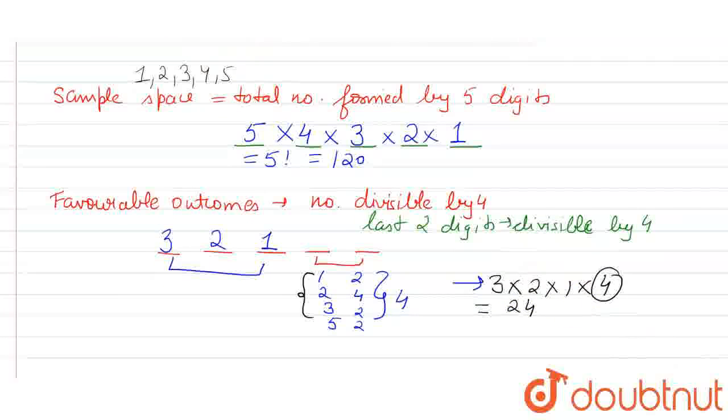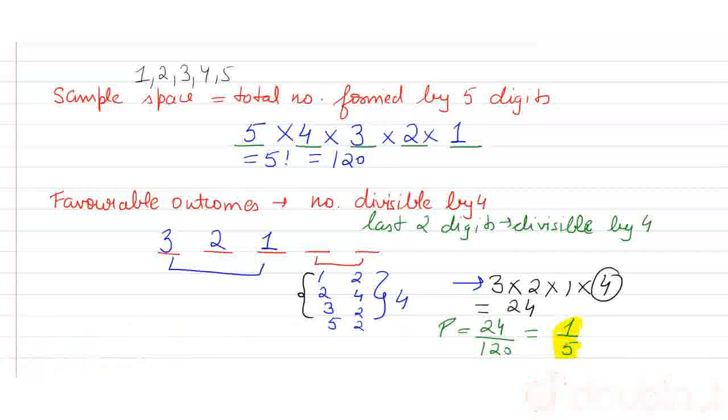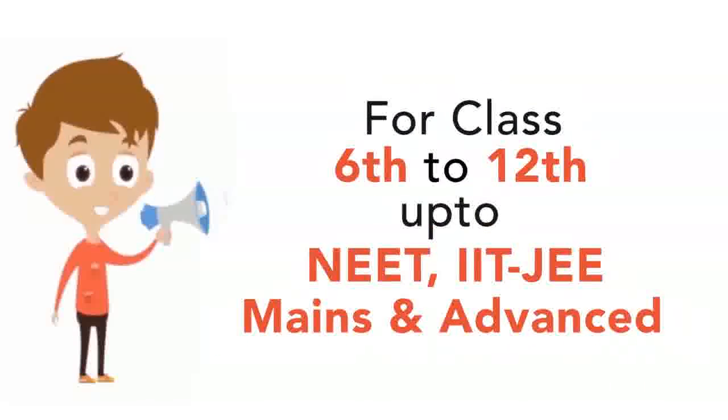Therefore the probability is favorable outcomes, that is 24, upon total outcomes, that is 120, that is equal to 1 upon 5. That is our answer. Thank you very much.